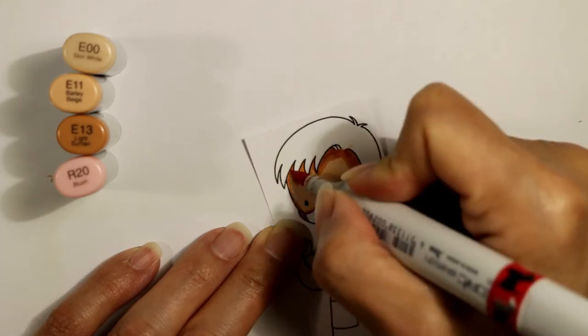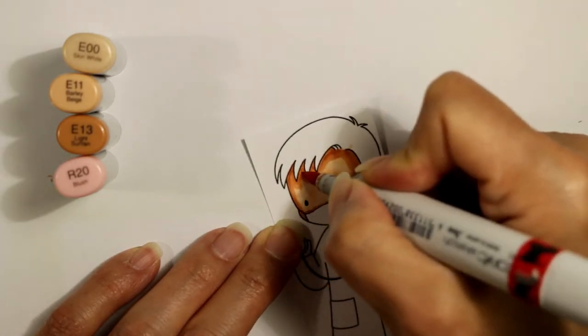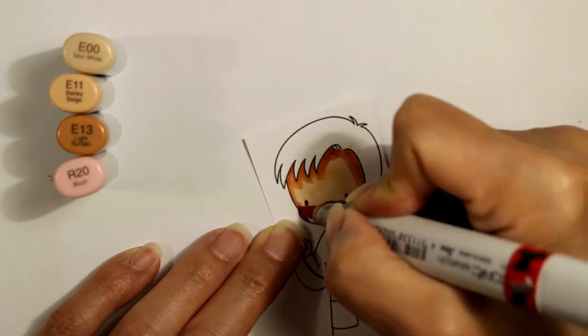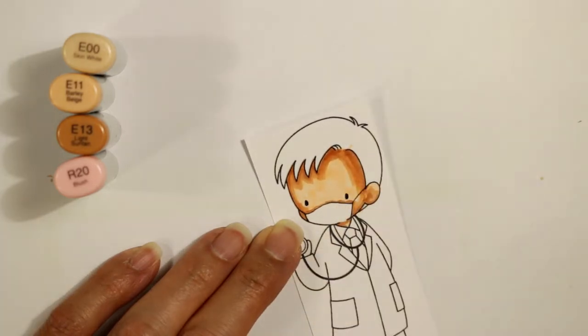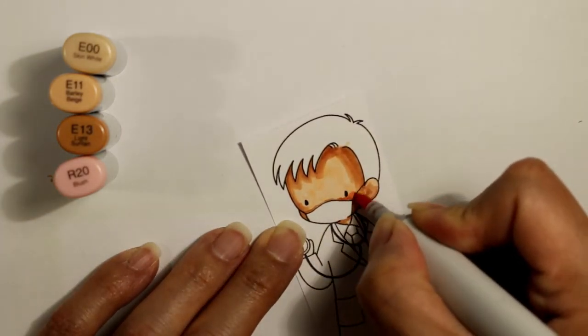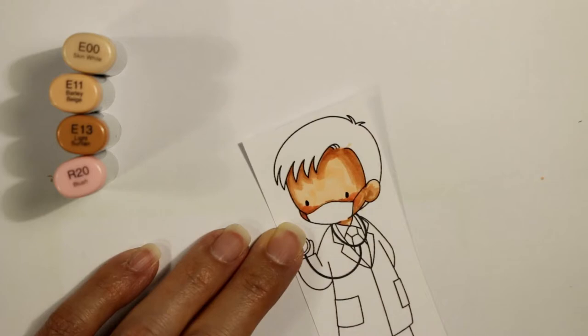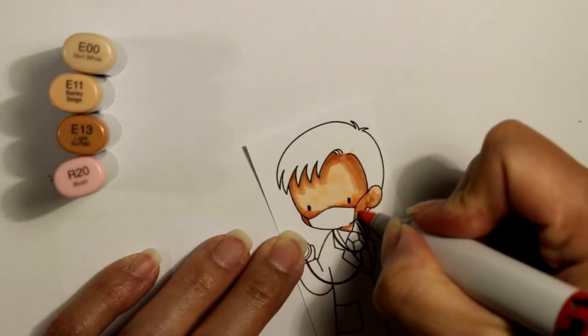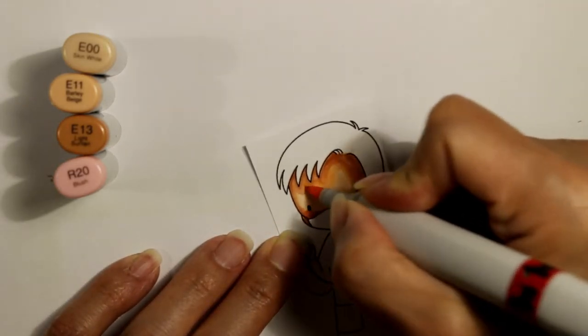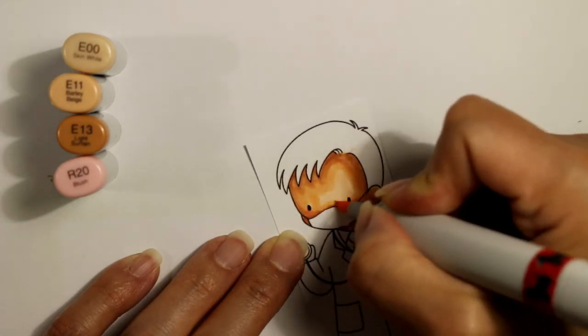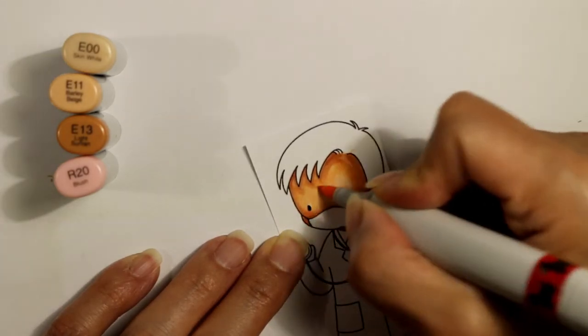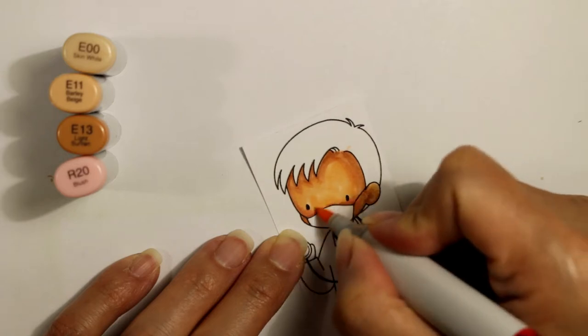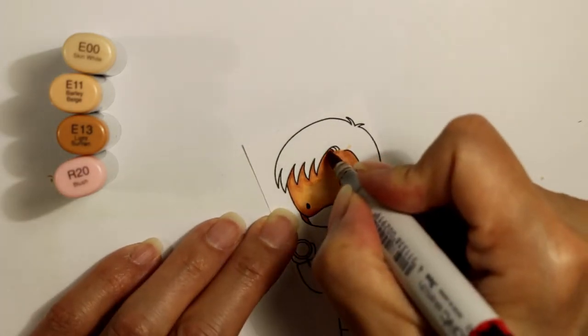Then I'm blending in an E11 so that I can try and connect the E13 to the E00, blending in further away from the edges. And then I add a little bit of the R20 for the cheeks. And then to blend the rosy blush to the rest of the skin, I'm using that E00 again.